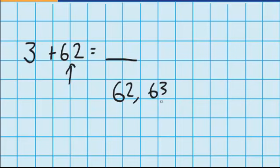So I'll have sixty-three, that's my first number, sixty-four is my second number, and sixty-five, which is my third number. So three plus sixty-two equals sixty-five.